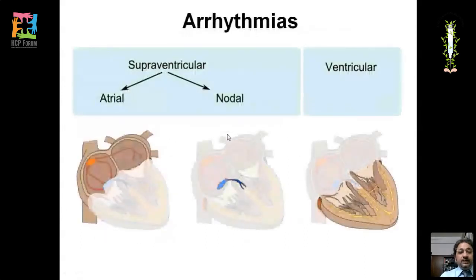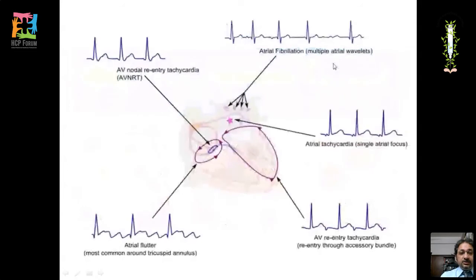Arrhythmias are classified as supraventricular (atrial and nodal) or ventricular. Supraventricular arrhythmias include atrial fibrillation, AV nodal tachycardia, atrial tachycardia, and atrial flutter.